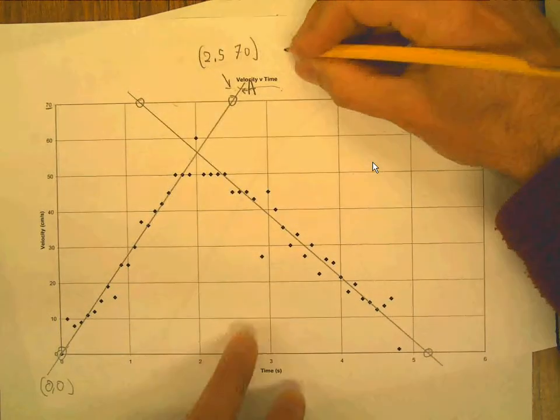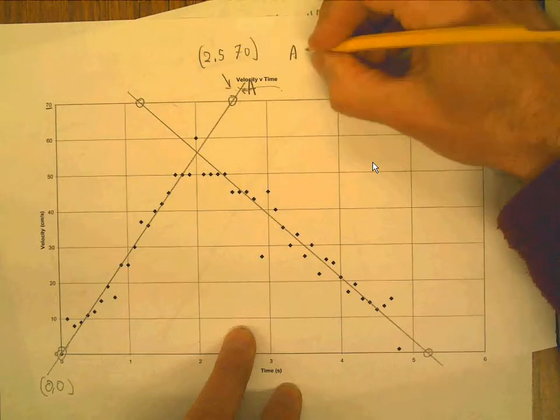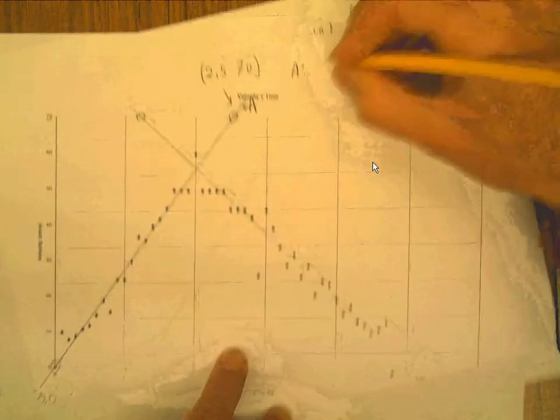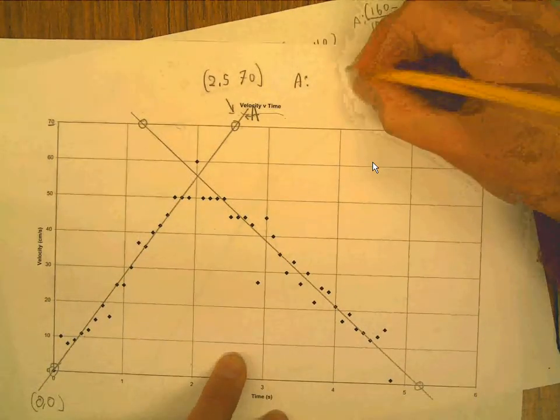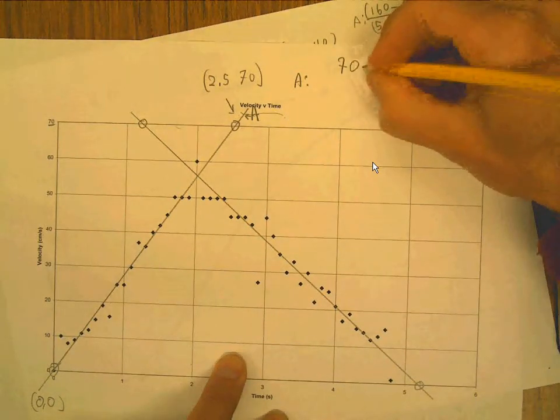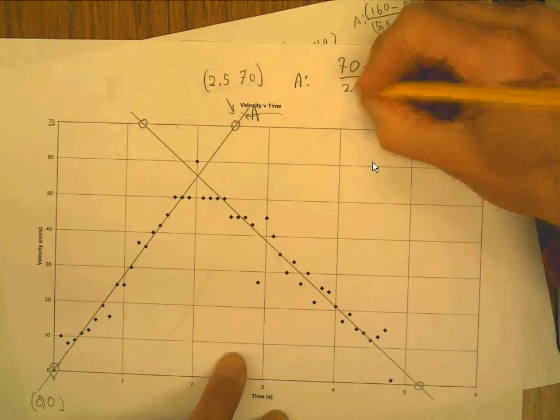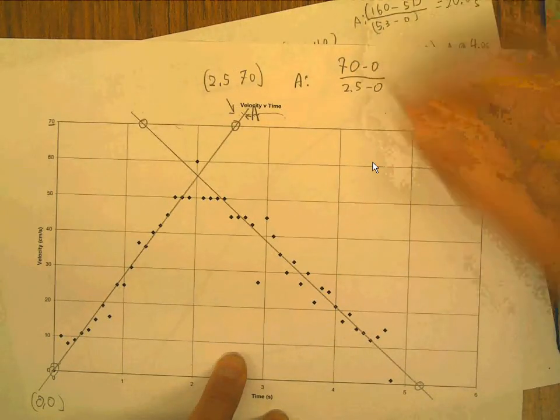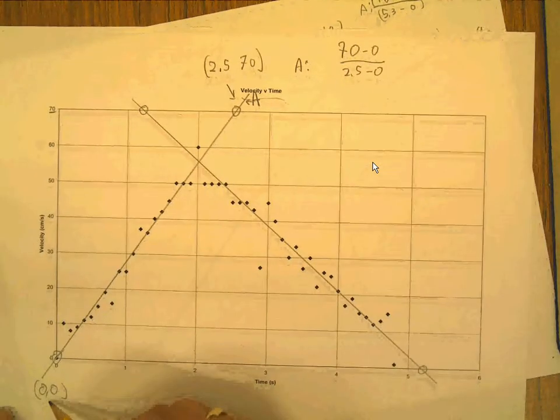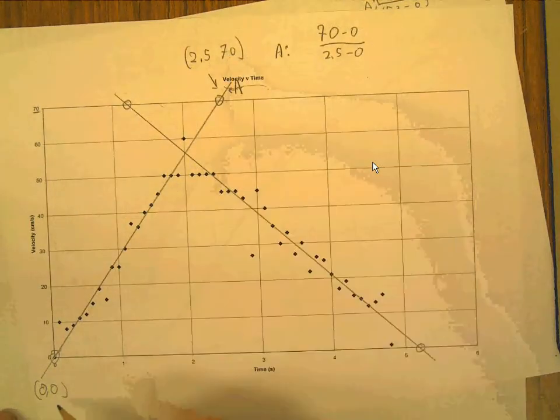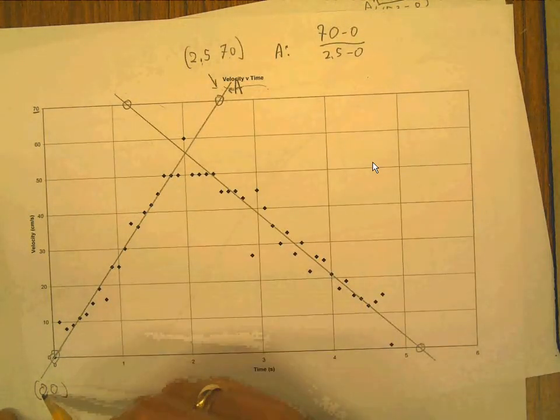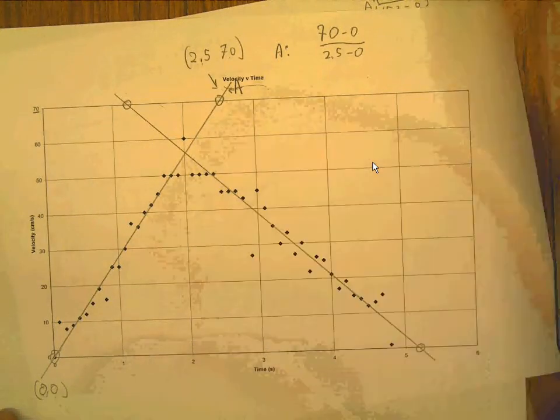Okay, the slope of A is rise over run and it rises all 70. So 70 minus zero over 2.5 minus zero, right? So again, you're just going y minus y divided by x minus x, right?